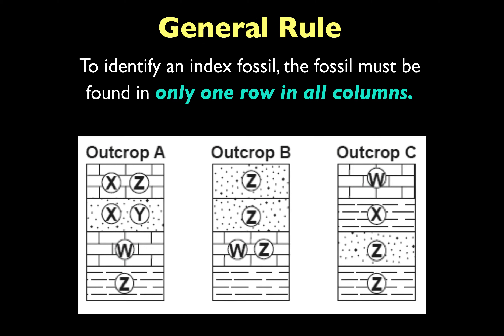So the general rule to identify an index fossil is: the fossil must be found in only one row in all columns. Fossil W is found in all three columns, and within each column it's only found once in one row. That's the rule you're going to use when trying to identify an index fossil.